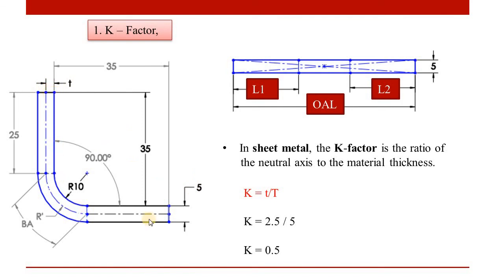If you use a specific material, bending type, and radius, you use the corresponding value of the neutral axis. The neutral axis position is determined by the k-factor value.